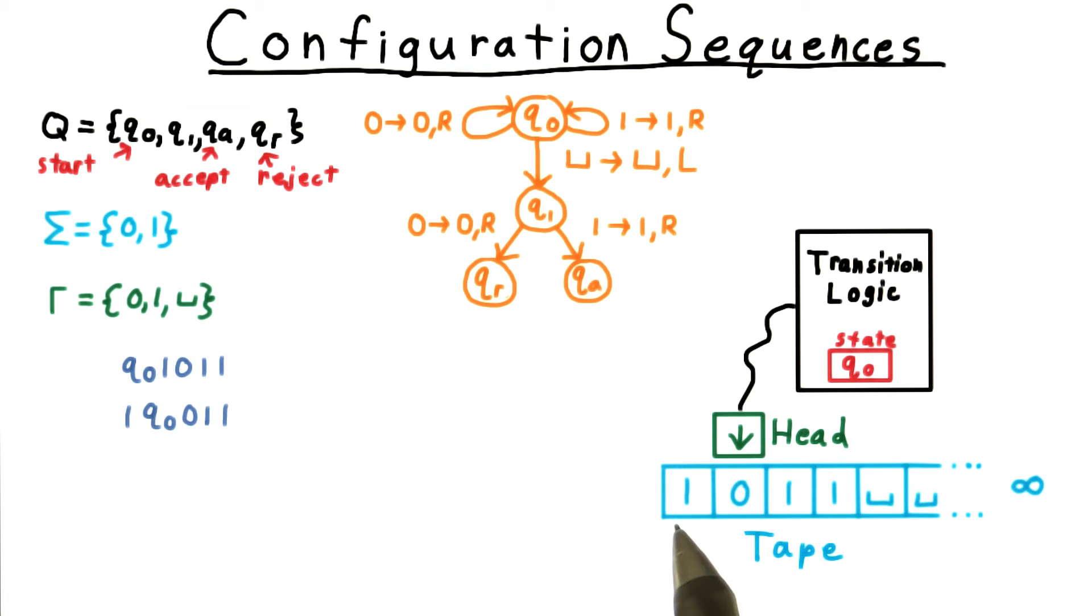After the first step, a 1 is to the left of the head. We're still in state q0, and this is the rest of the string, 0, 1, 1, 0, 1, 1.